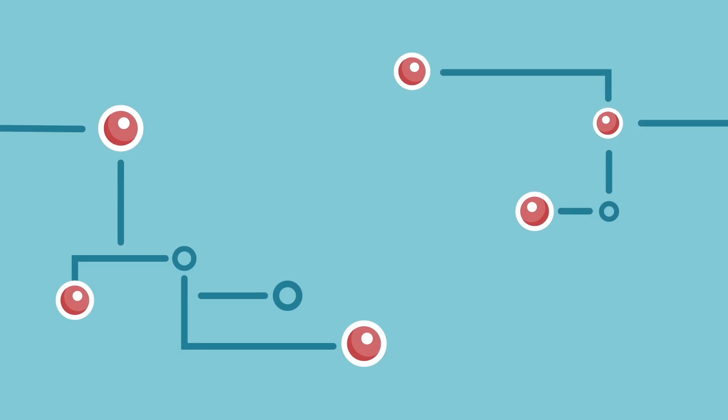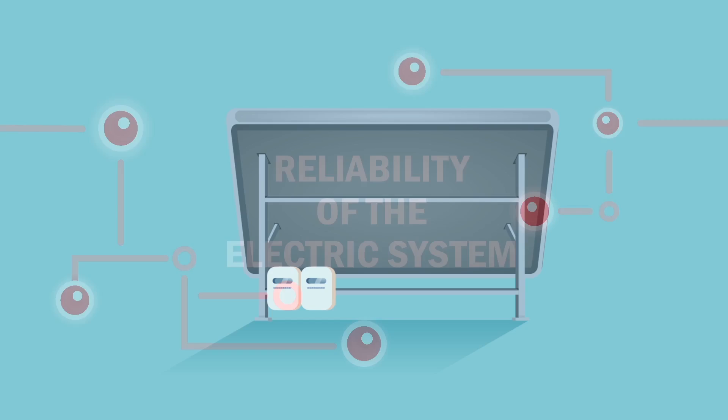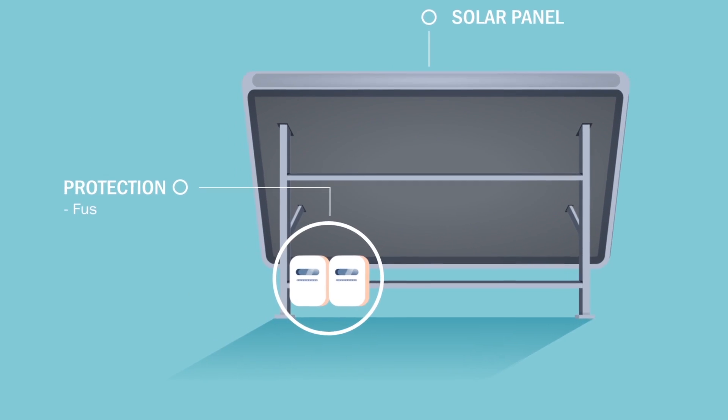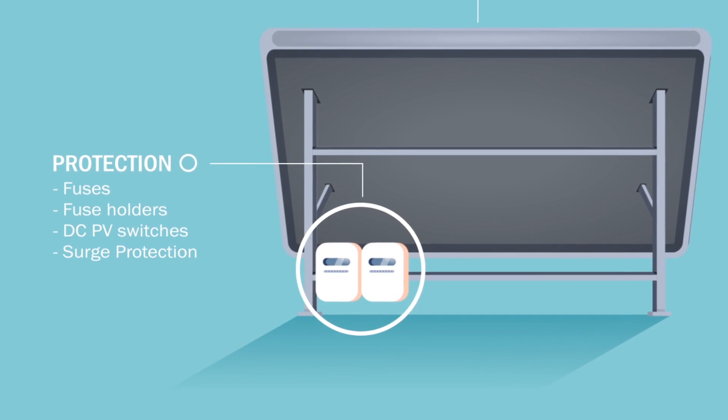The proper functioning of these panels depends on the reliability of the electric systems. Mersenne provides fuses, fuse holders, junction boxes, surge protection, and smart switches.